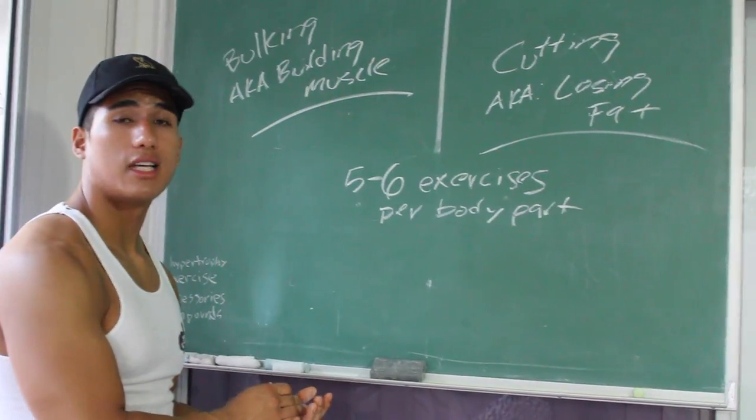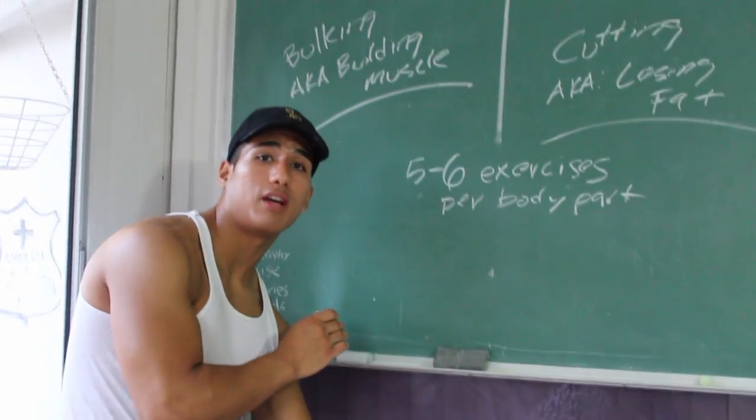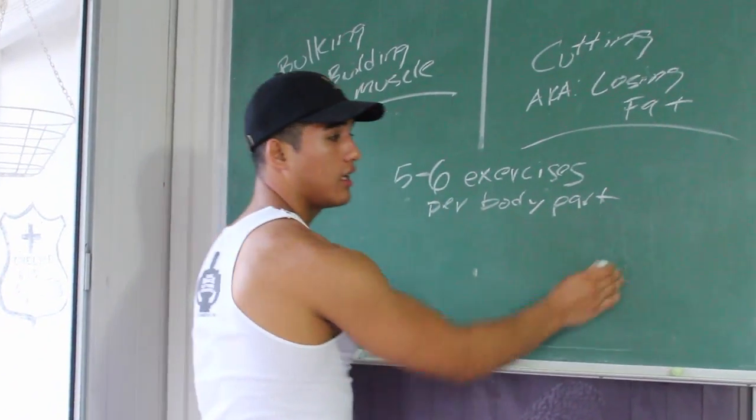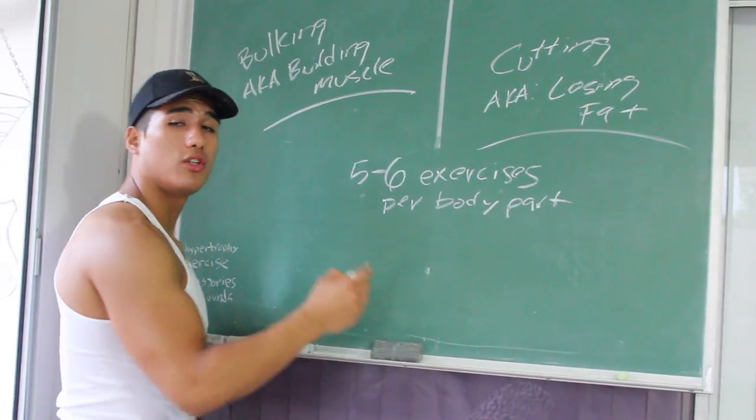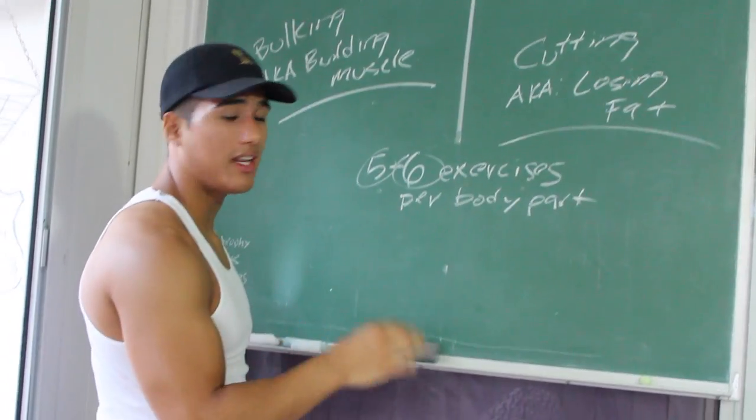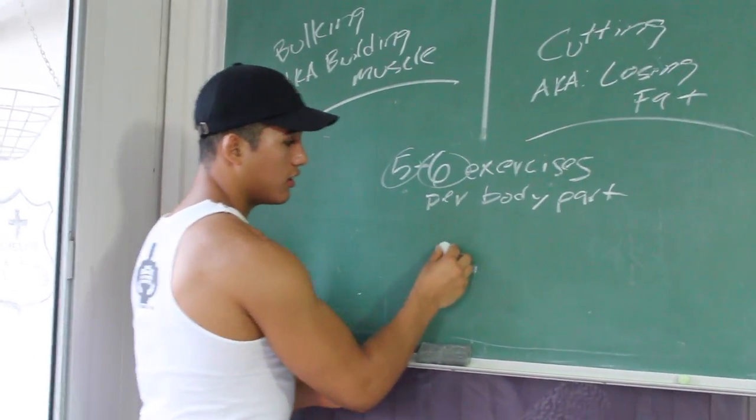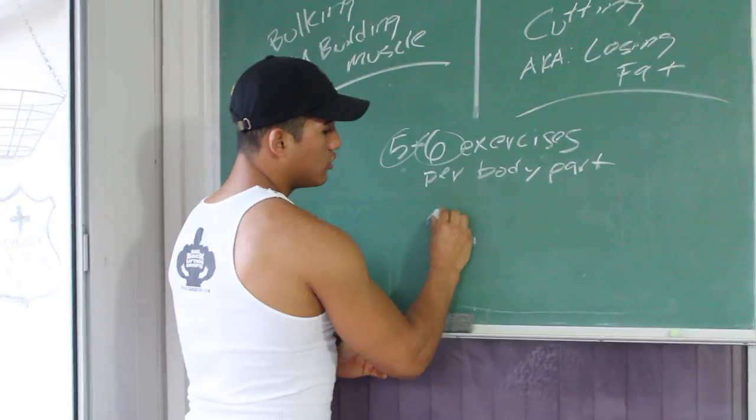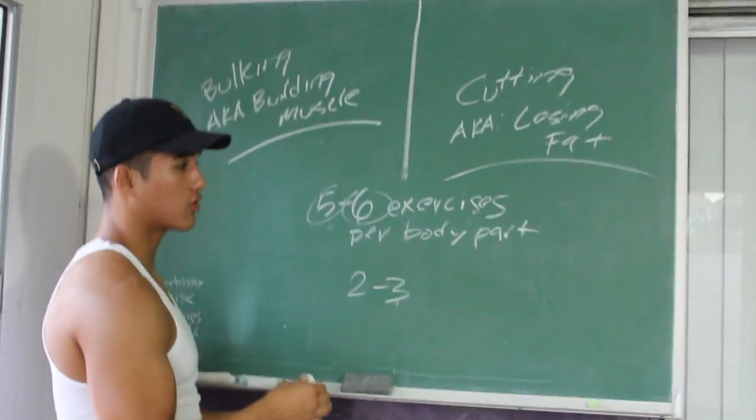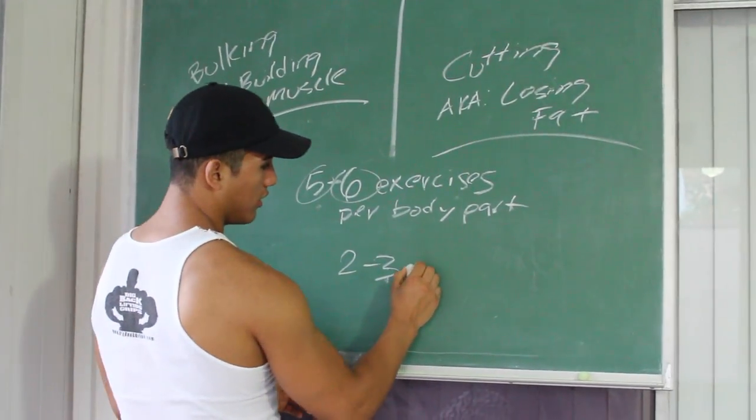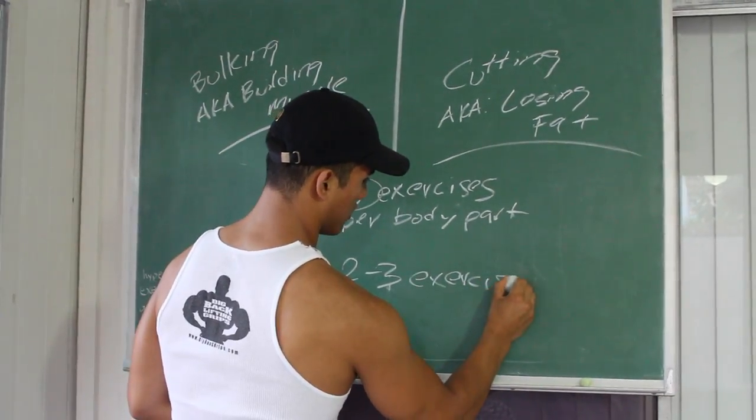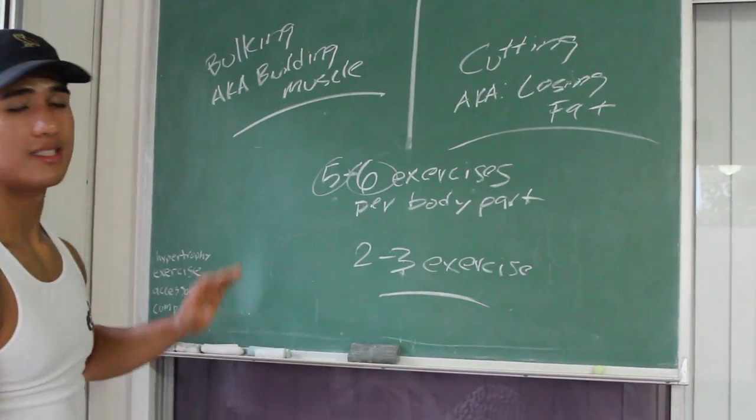But if you're doing two body parts a day, keep the same five to six for your main body part of that day. And then if for the second, I would recommend doing two to three, because if you're working now in seconds, obviously you're pretty strong. So two to three exercises, boom, simple.